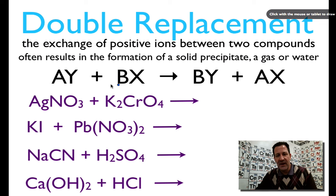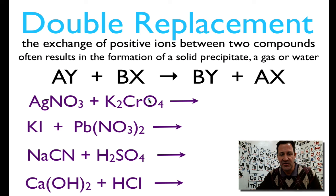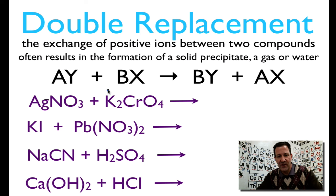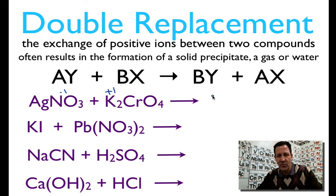Let's look at a couple of examples and figure out what the products are going to be and also balance these chemical equations. Our first one has silver nitrate and potassium chromate. We have four things: silver, nitrate, potassium, and chromate — and they're going to recombine. We recombine the inner two first, and to do this we have to figure out the charges. Potassium is plus one, nitrate is minus one, so we're going to have a one-to-one ratio to form potassium nitrate, KNO₃.